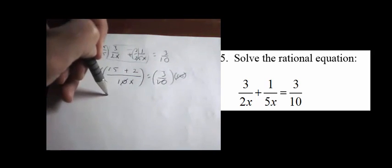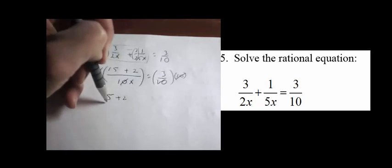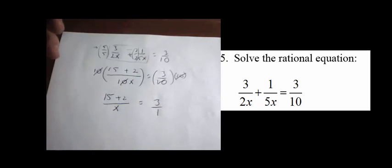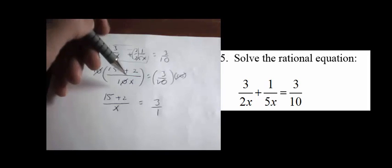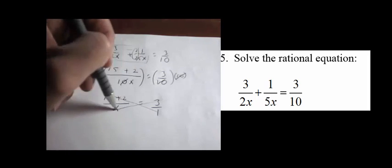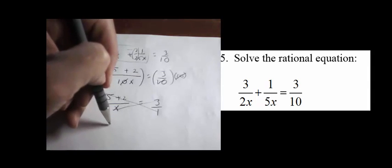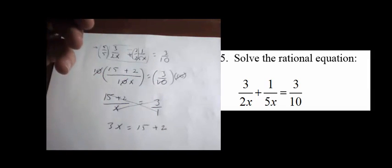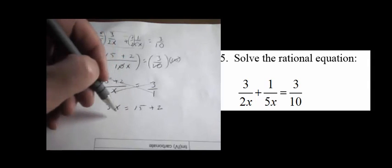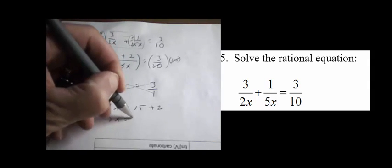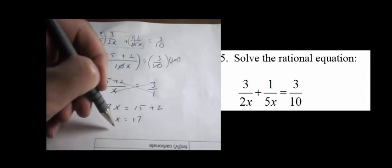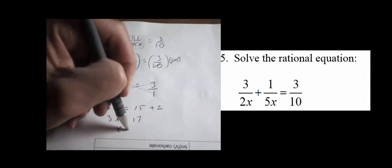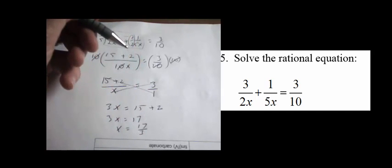After multiplying both sides by 10, we're left with (15+2)/x equals 3/1. Now we cross multiply: 3x equals 15+2. Combining like terms, 3x equals 17. Therefore x equals 17/3, or 17 thirds.